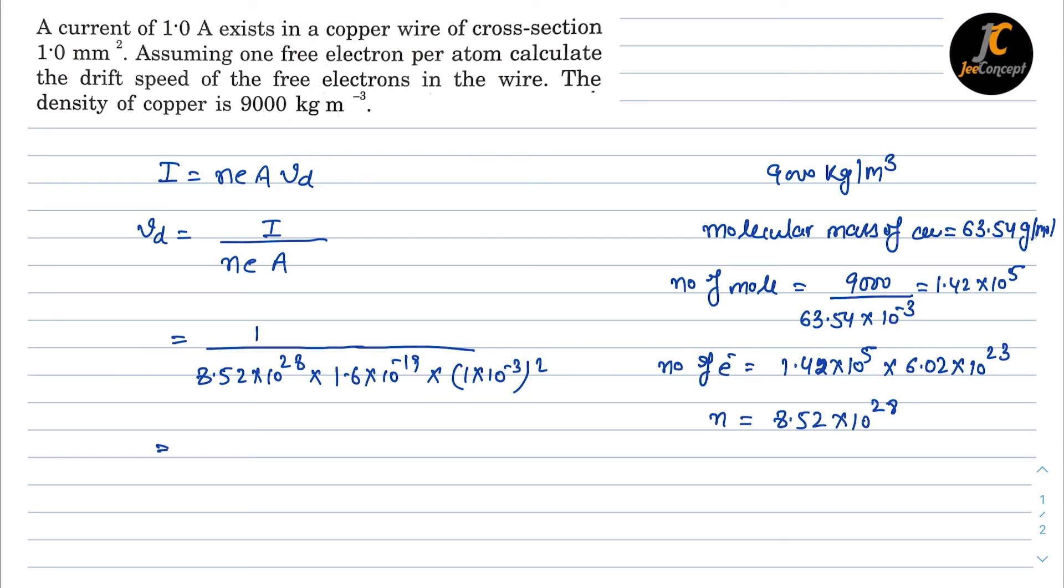Right, and if we calculate this one we will get 0.074 into 10 raised to power minus 3 meter per second is the drift velocity. Or I can also say that 0.074 mm per second as drift velocity. So this is the solution of this problem.